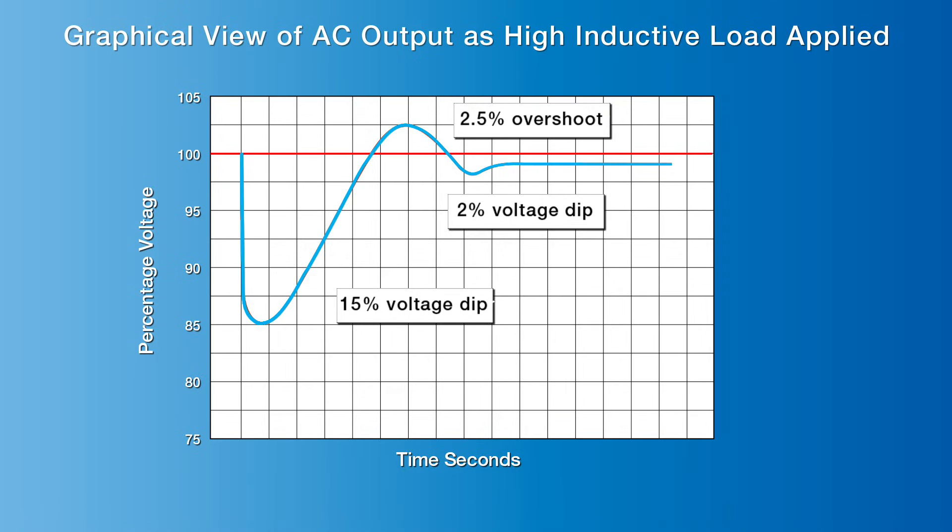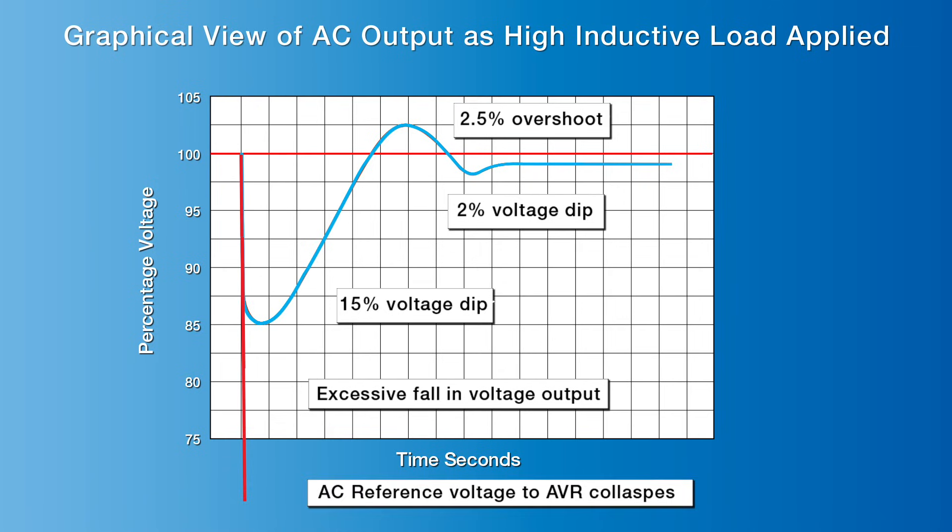However, should the inductive load on the generator be too high, such as more than 50% of generator output, the current required to start the motors will cause an excessive fall in generator voltage output and reach a point where there is insufficient reference voltage to the AVR, and hence not enough DC current to the exciter, causing the excitation to collapse, and zero voltage from the main stator.